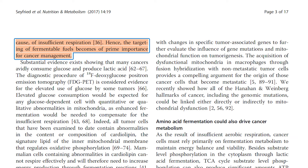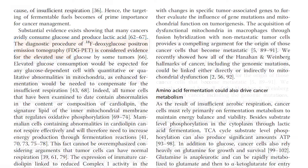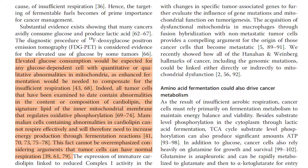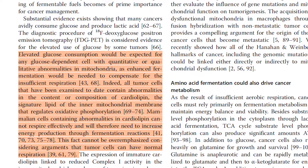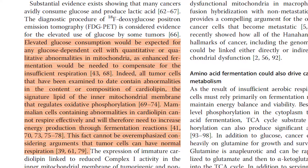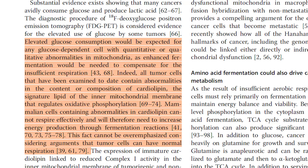Hence, the targeting of fermentable fuels becomes of prime importance for cancer management. Elevated glucose consumption would be expected for any glucose-dependent cell with quantitative or qualitative abnormalities in mitochondria, as enhanced fermentation would be needed to compensate for the insufficient respiration. Indeed, all tumor cells that have been examined to date contain abnormalities in the content or composition of cardiolipin, the signature lipid of the inner mitochondrial membrane that regulates oxidative phosphorylation. Mammalian cells containing abnormalities in cardiolipin cannot respire effectively, and will therefore need to increase energy production through fermentation reactions. This fact cannot be overemphasized considering arguments that tumor cells can have normal respiration.